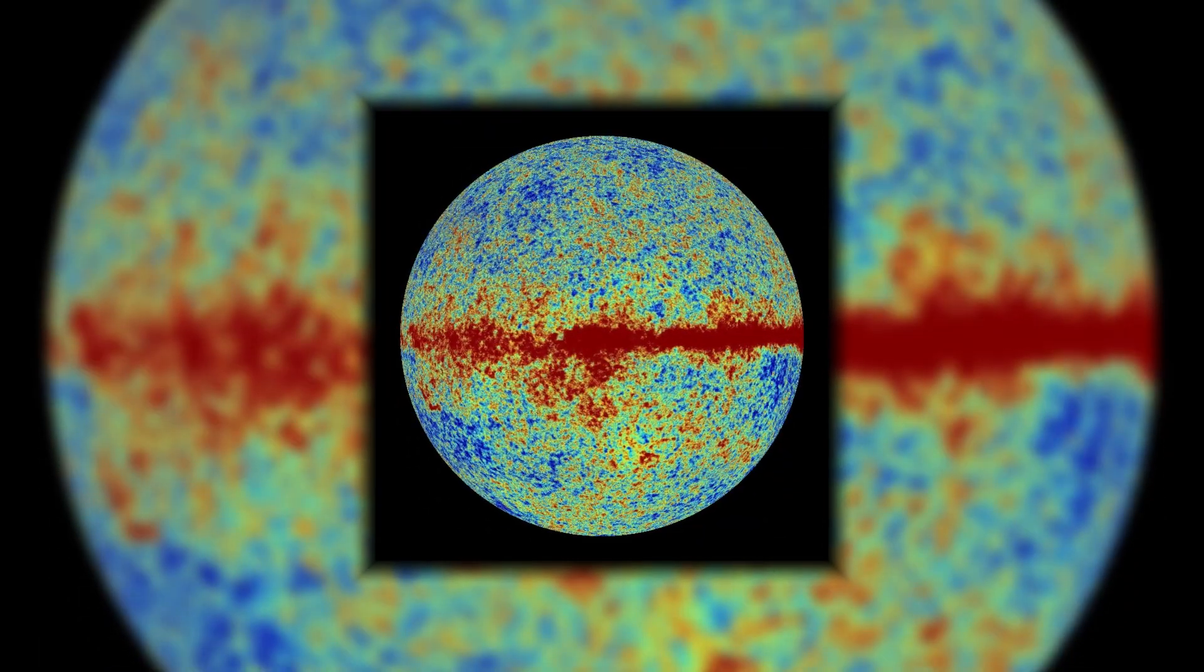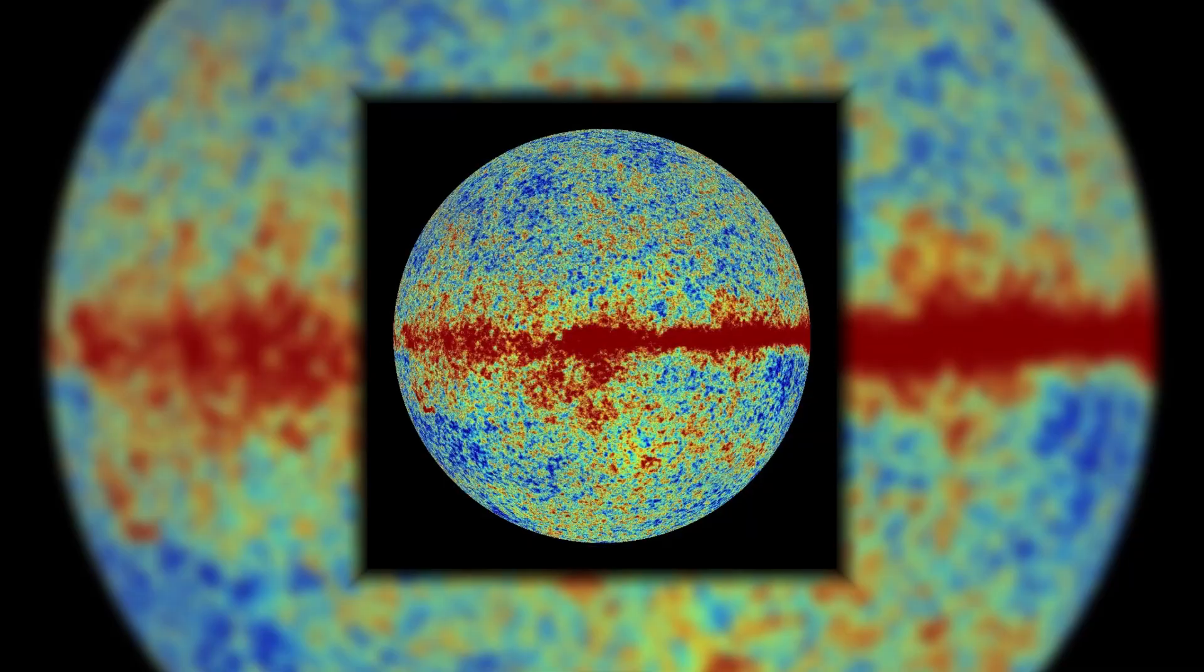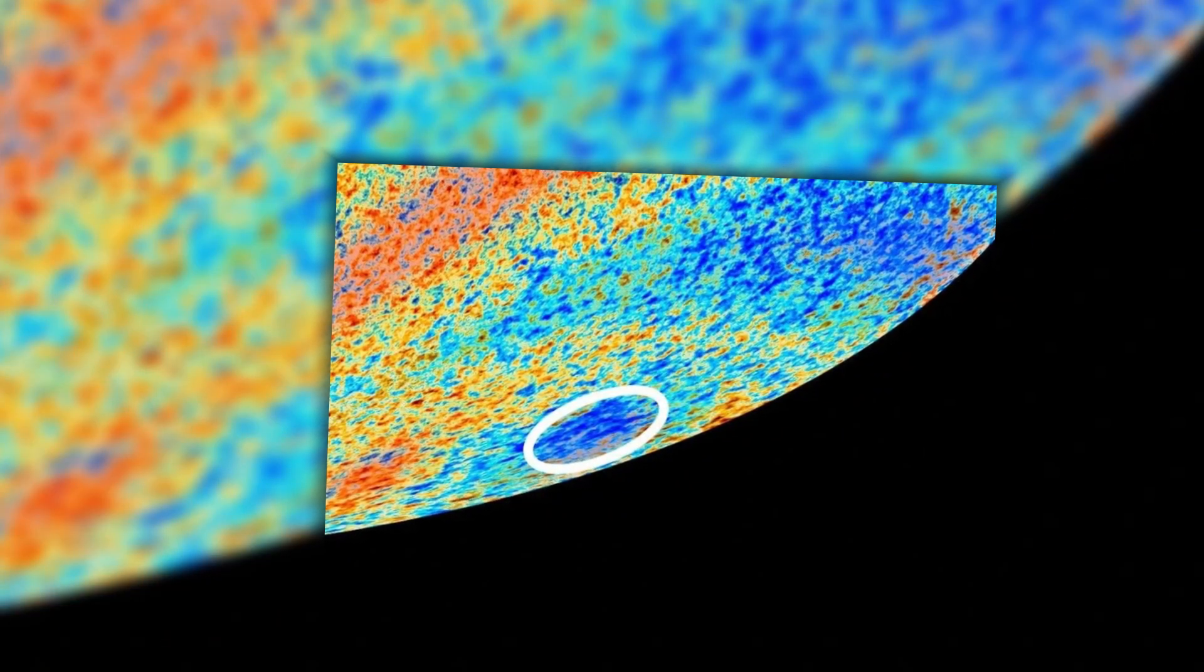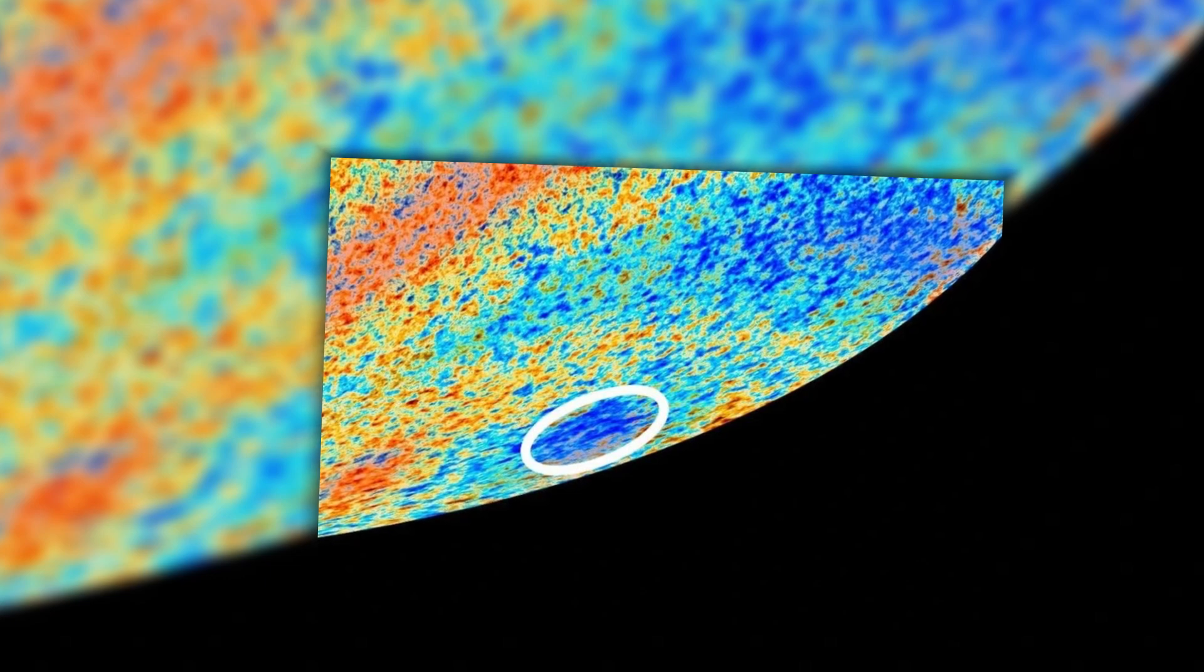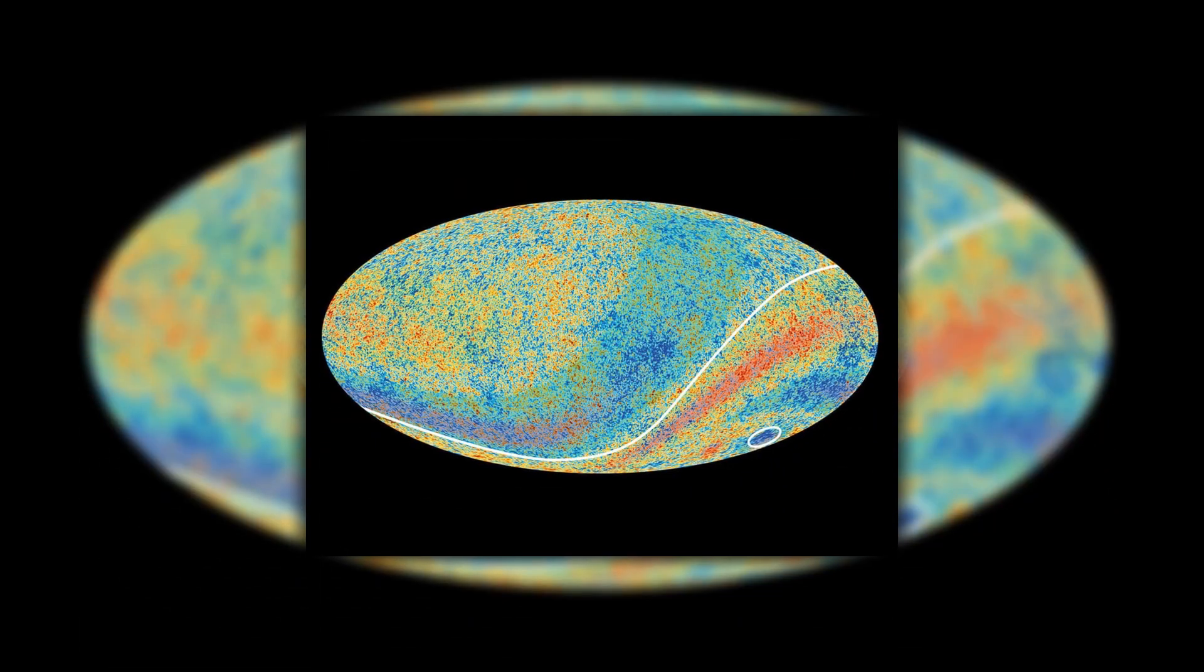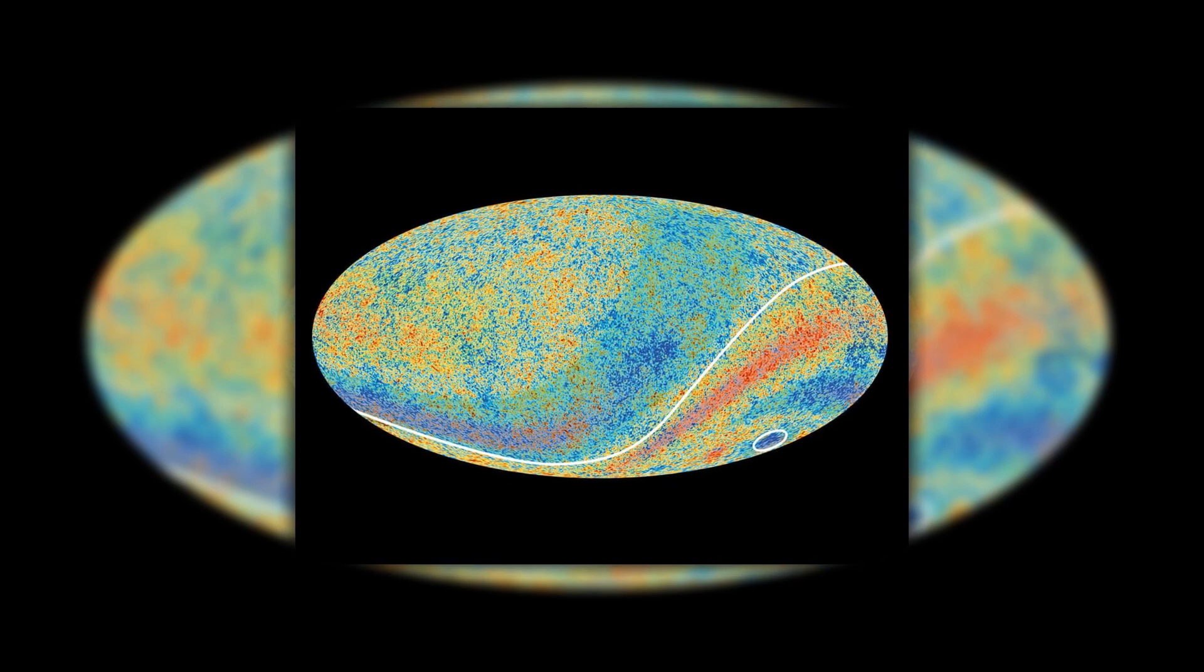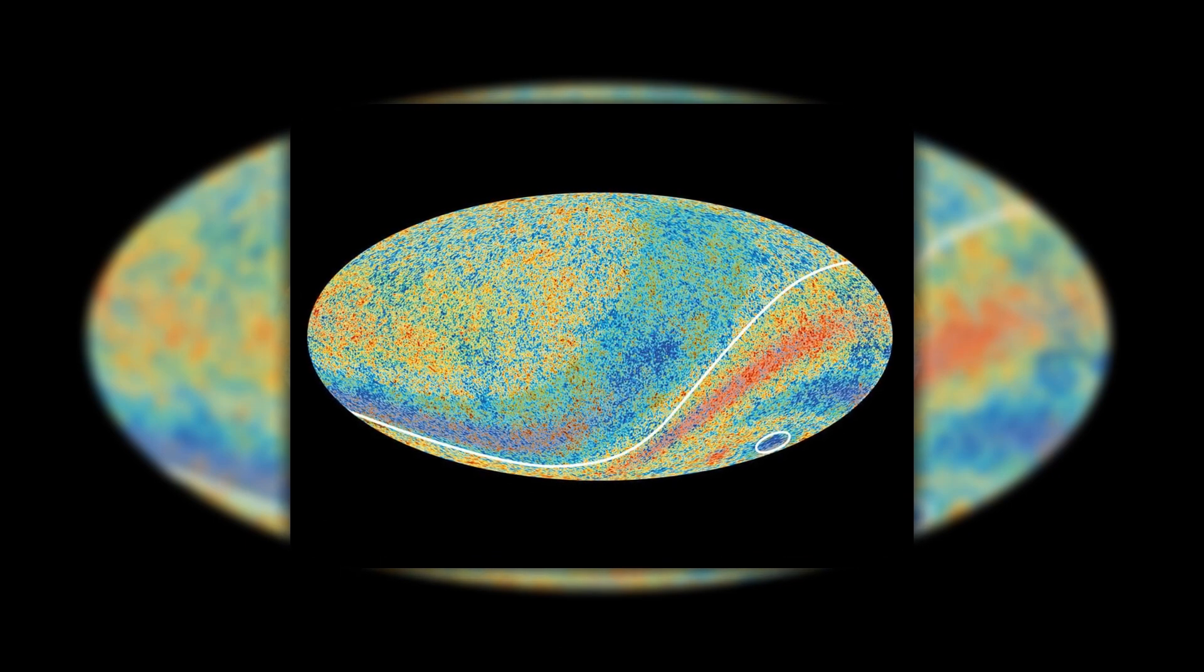One of the most mysterious features of the CMB is the region known as the Cold Spot. The Cold Spot is a large area of the CMB that is significantly colder than the average temperature. The Cold Spot is approximately 0.15 degrees Celsius colder than the average CMB temperature of 2.725 degrees Celsius.